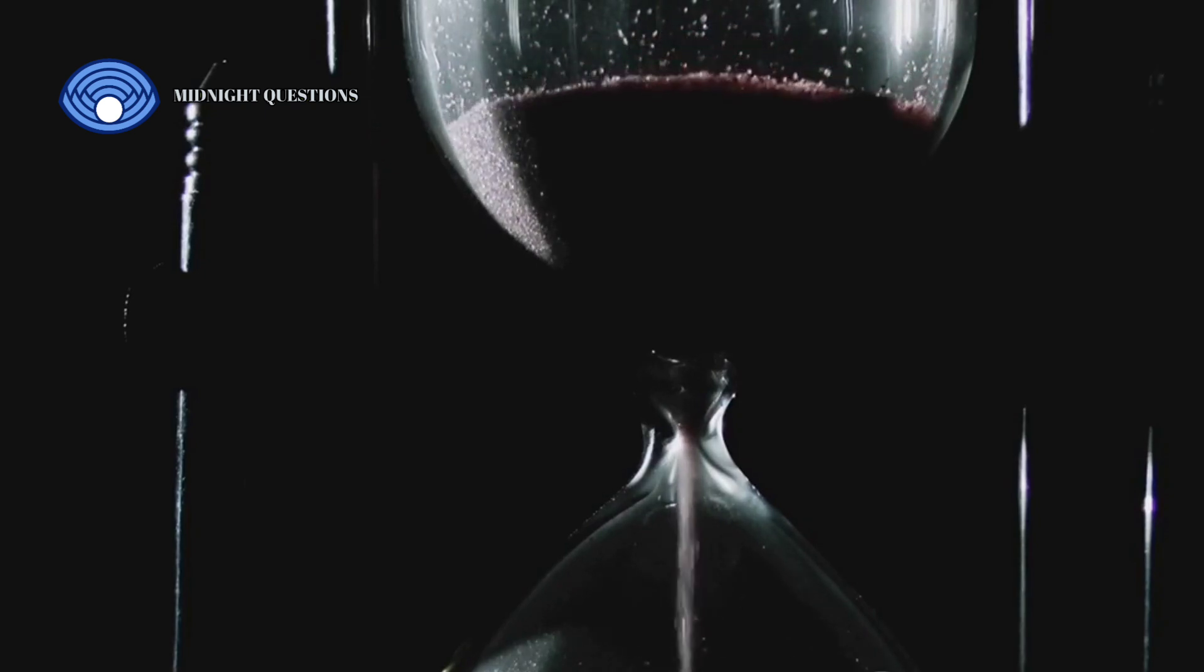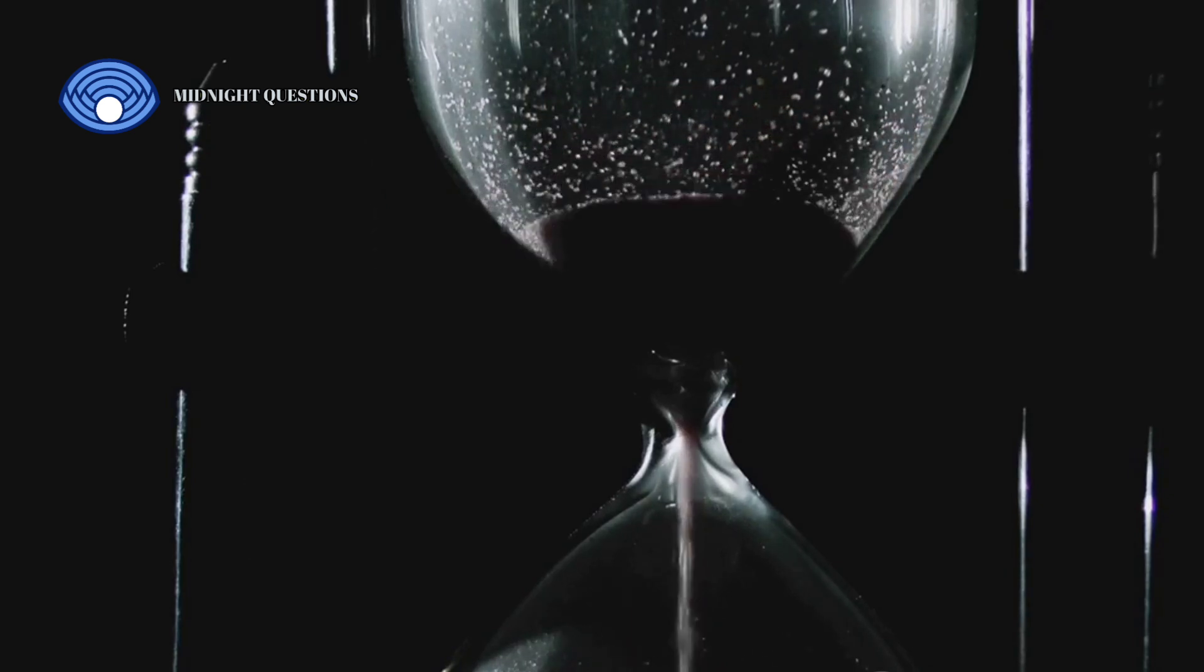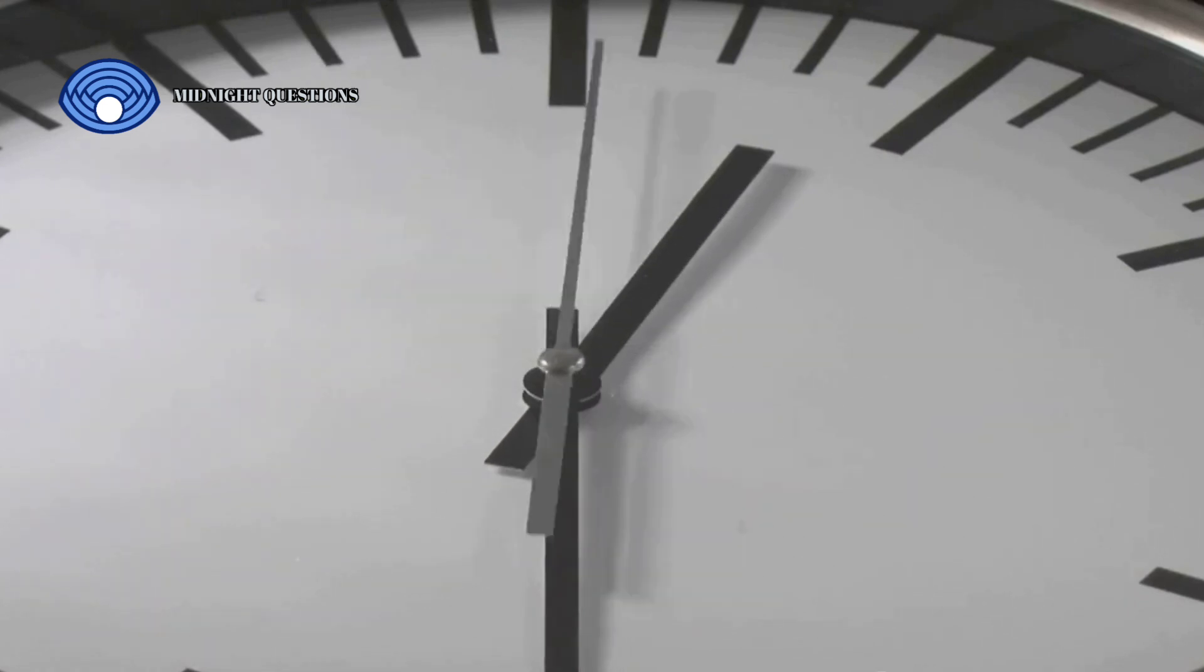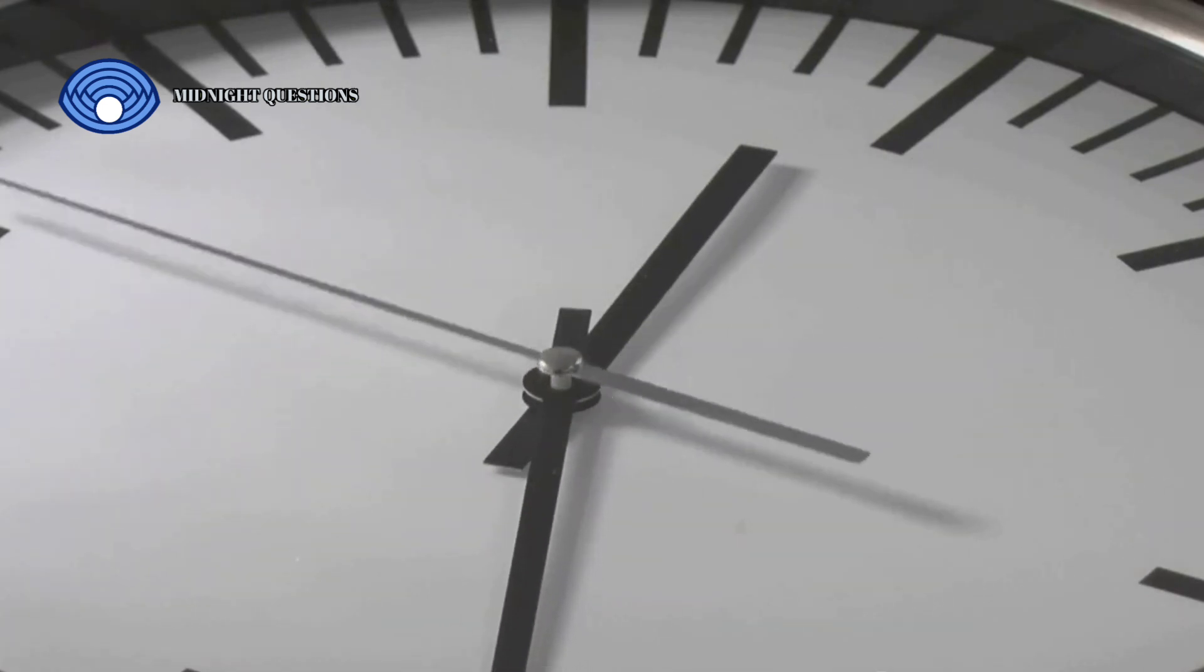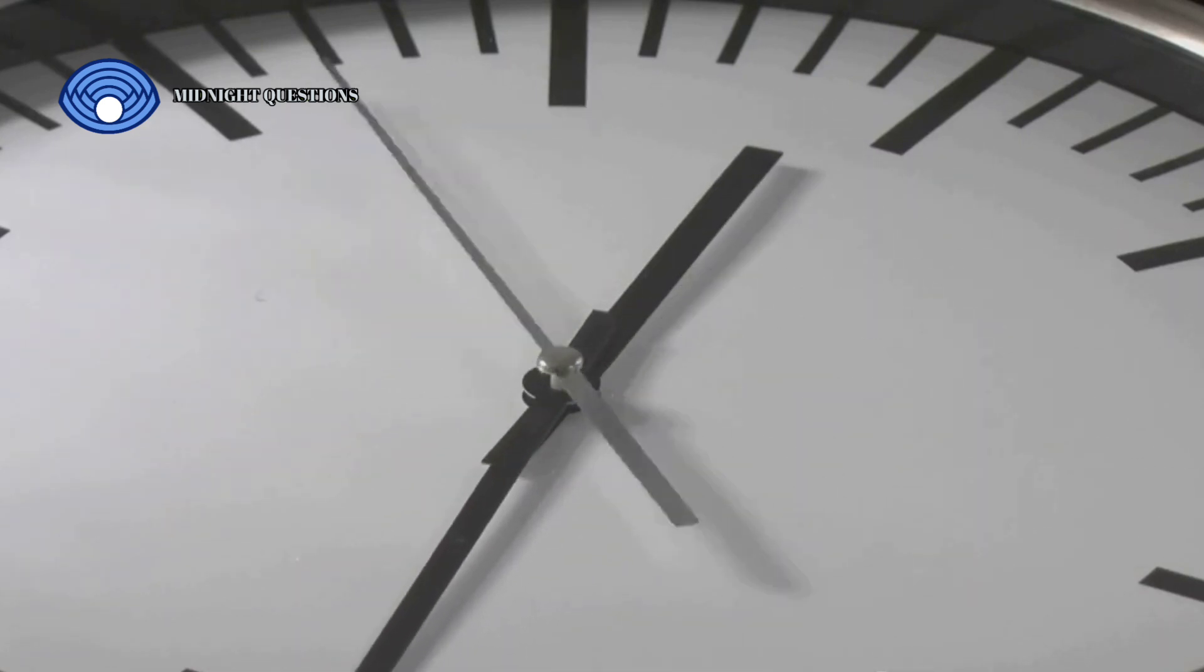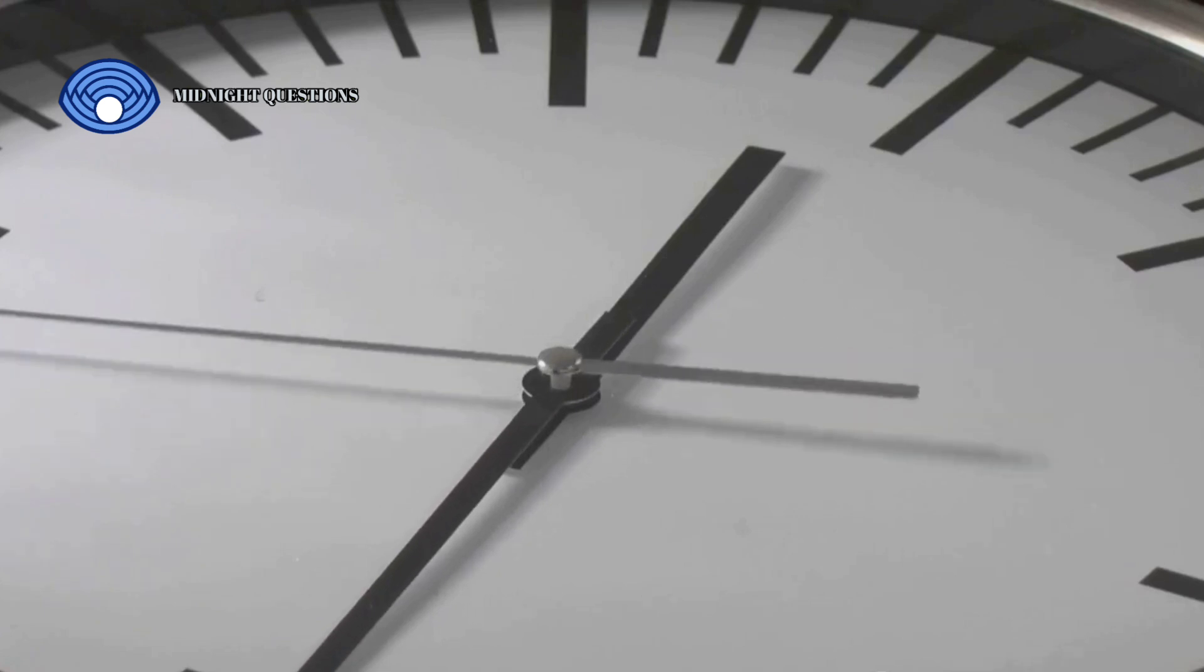Imagine being on a spaceship cruising near the speed of light. According to Einstein, for you on the spaceship, time would appear to pass normally. However, for those observing from Earth, it would seem as if your clock is ticking slower. This is known as time dilation. A mind-boggling concept that suggests time travel into the future is theoretically possible.